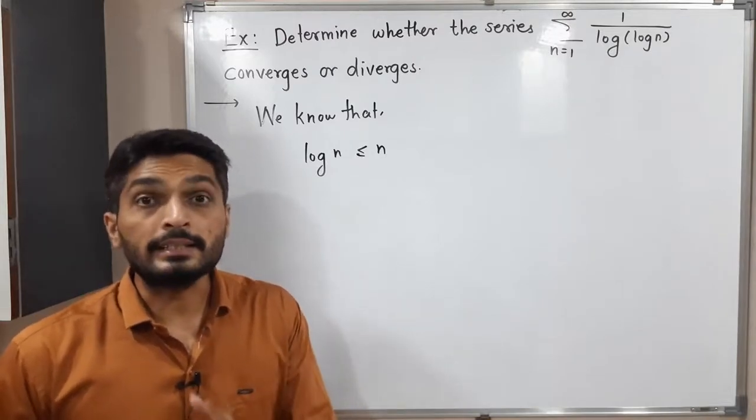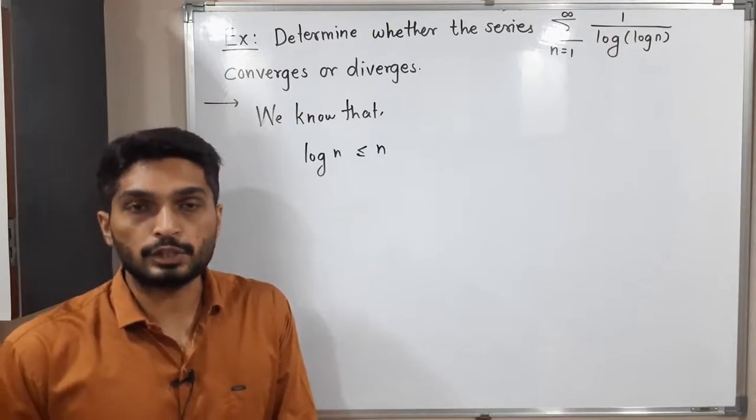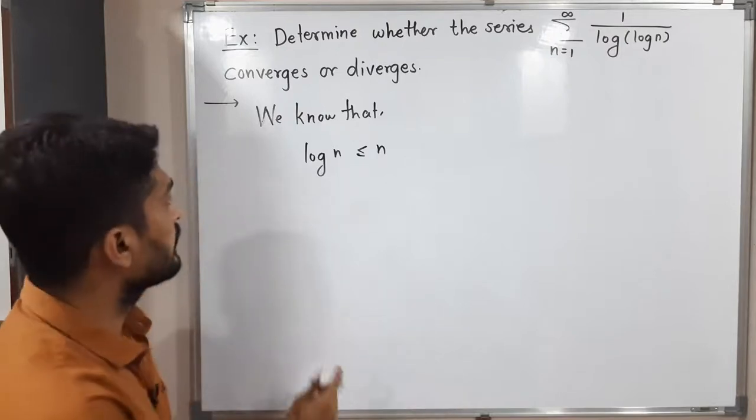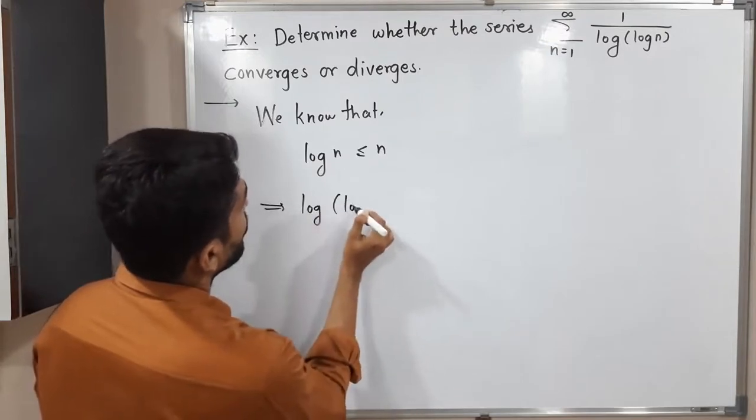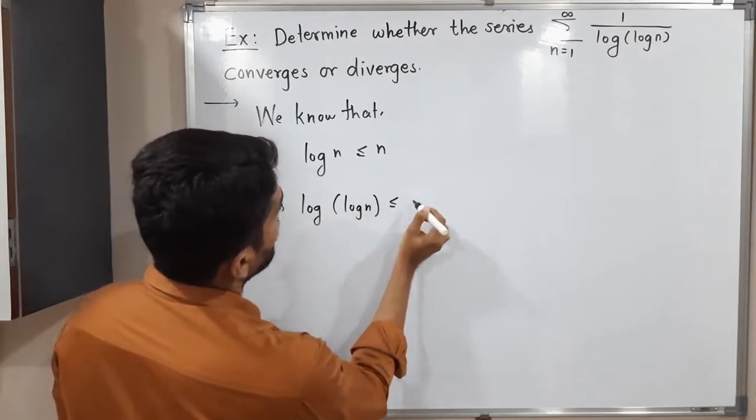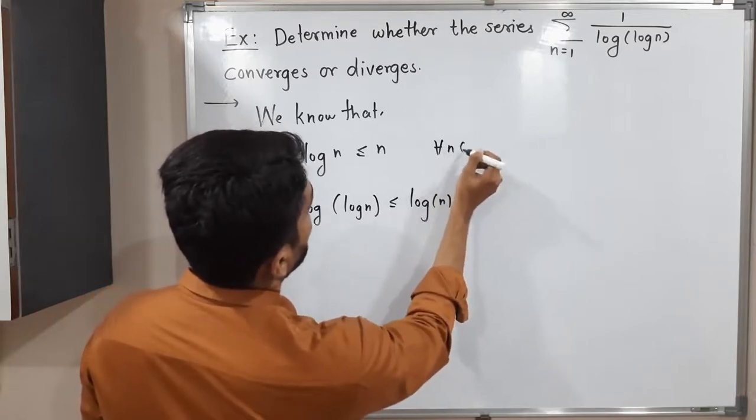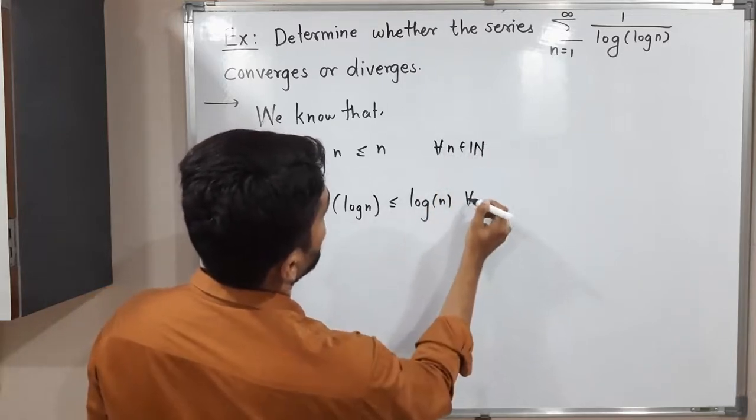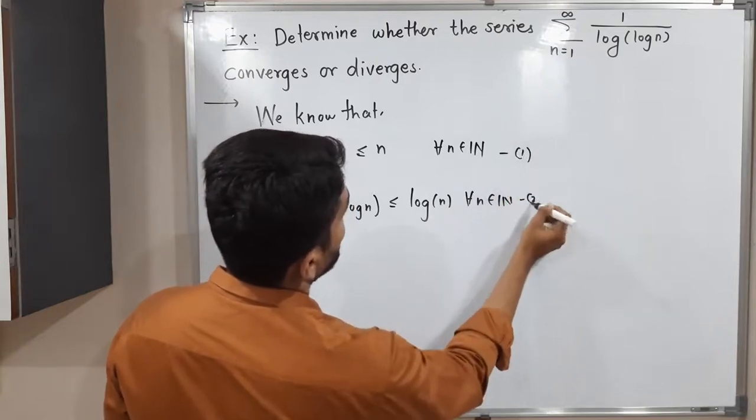You know that log is an increasing function. I will take log of both sides, and since it is an increasing function, the same inequality will be maintained. This implies log of log n is less than or equal to log n. This is true for all n belongs to the set of natural numbers. This is equation 1, this is equation 2.